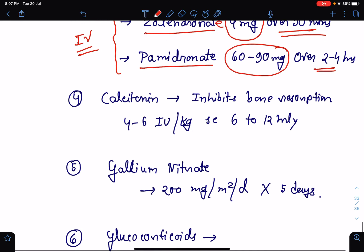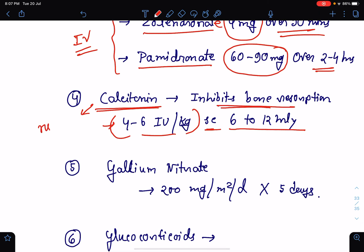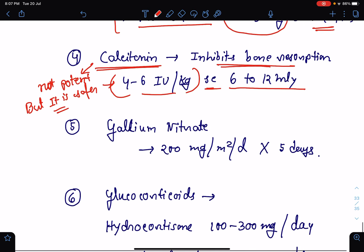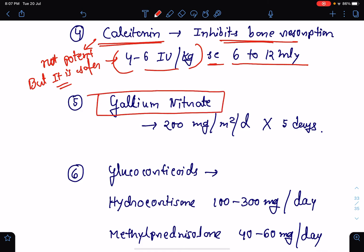One more drug is calcitonin. Calcitonin also inhibits bone resorption. It can be used at a dose of 4 to 6 international unit per kg subcutaneously at an interval of 6 to 12 hours. It is not very potent in case of hypercalcemia but it is safer because it can be used in case of renal insufficiency also. One more option is gallium nitrate. It also prevents resorption of calcium from bone. It can be used at a dose of 200 mg per m2 per day. It should be used as a continuous infusion for 5 days. It is also to be avoided in cases of renal failure.